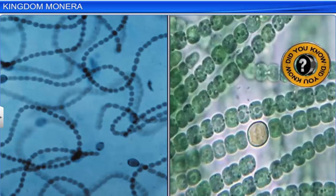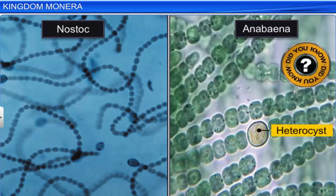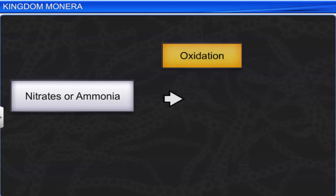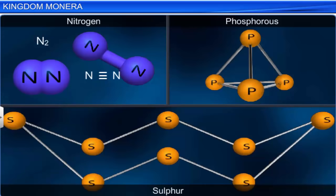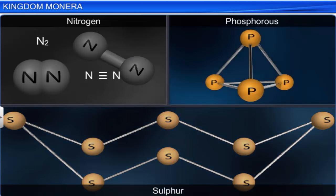Cyanobacteria like Nostoc and Anabaena can also fix atmospheric nitrogen in their specialized cells called heterocysts. Chemosynthetic autotrophs oxidize various inorganic substances such as nitrates or ammonia and use the energy released for ATP production. They help in recycling nutrients like nitrogen, sulphur, and phosphorus.